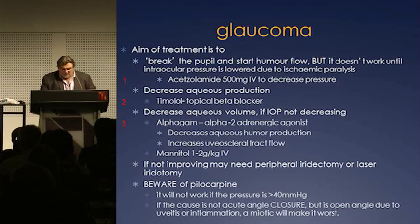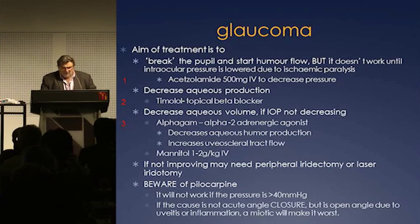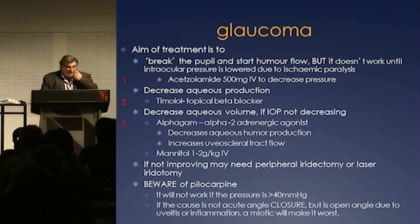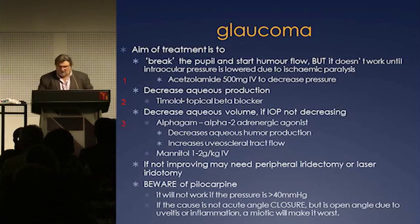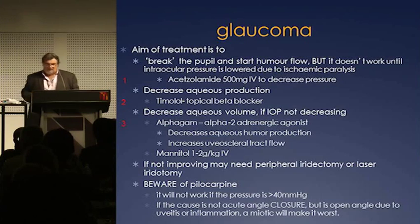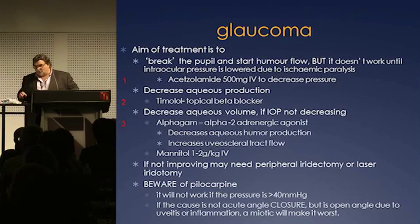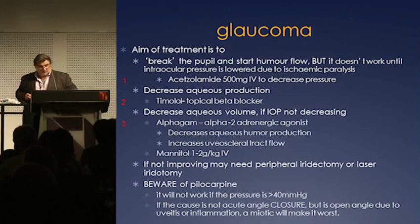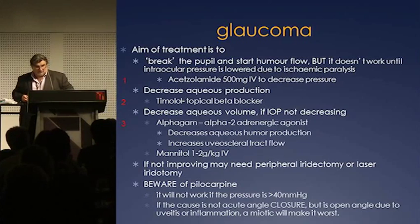Beware: if you give pilocarpine and it is the wrong sort of glaucoma, you can cause issues. Normal intraocular pressure is between 10 and 21 — most people say about 14 or 15. You've got to be sure you can use this equipment. In the end we got the diagnosis and treated him, though I don't think his outcome was going to be spectacular given he'd had this for a whole week.